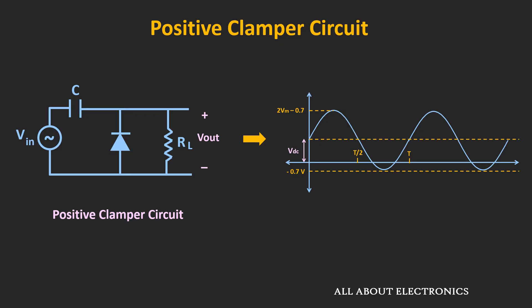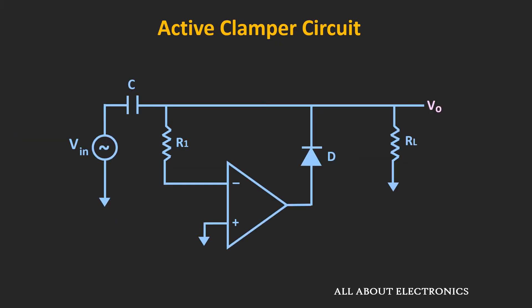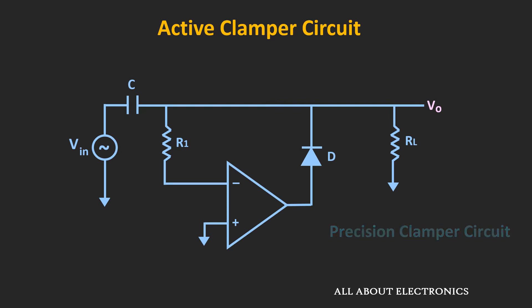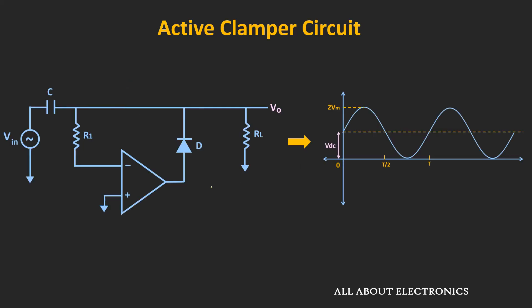In this video, we will see the active clamper circuit which is designed using the op-amp. This circuit is also known as the precision clamper circuit, because in this circuit the diode behaves like an ideal diode. So there will not be any voltage drop across this diode. If we apply a sine wave with the peak value of Vm to the circuit, then we will get this type of waveform — the entire waveform will get DC shifted by Vm volts.